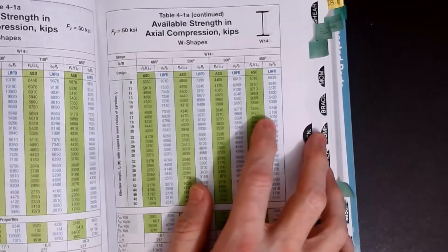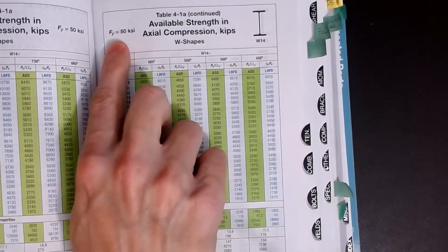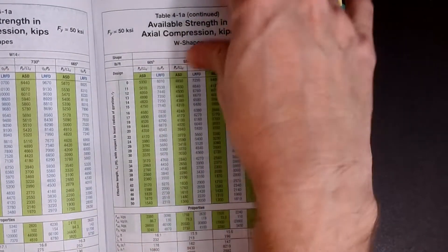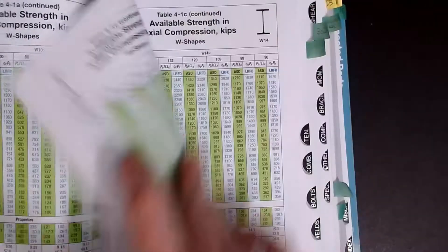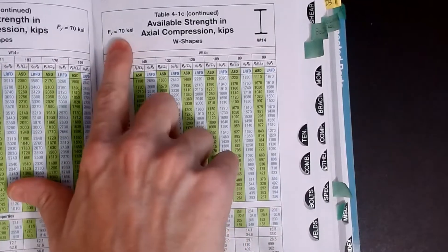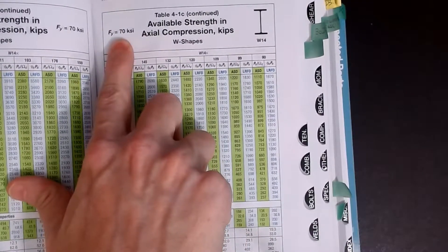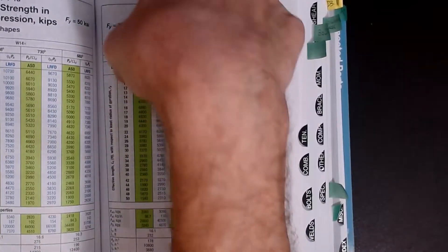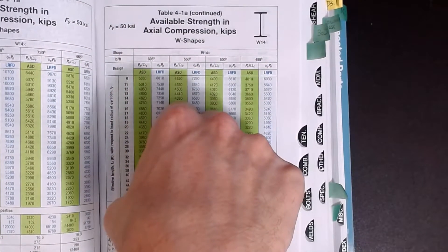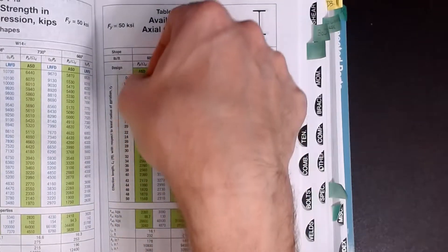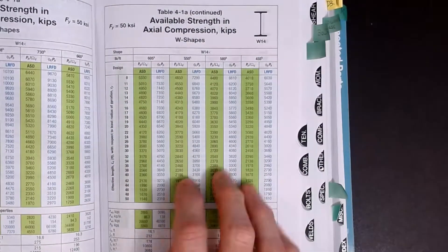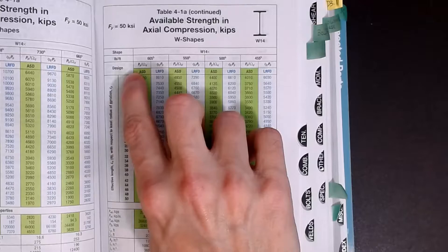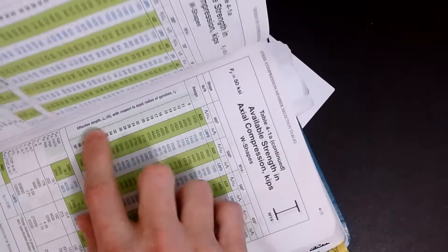Now one thing that you want to notice, I'm in a W shape table, I'm in an FY of 50 KSI. You've got to make sure you get into the right value. You can see they actually have 70 KSI tables also.